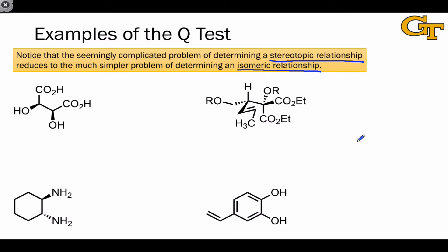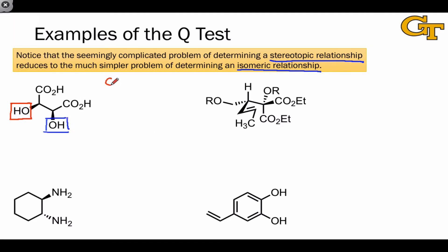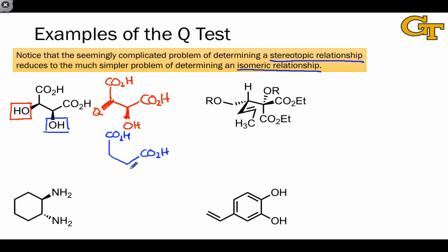So while generating the Q molecules is a little bit of work up front, once they've been generated, we're applying a method we already know to determine a stereotopic relationship. In the first example, imagine we're interested in the stereotopic relationship between this hydroxyl I'm boxing in red and this hydroxyl that I'm boxing in blue. Replacement of the red hydroxyl group with an achiral test group Q gives the structure shown here. We haven't touched the other hydroxyl group at all; we've simply replaced the red boxed hydroxyl with the letter Q. Replacement of the hydroxyl boxed in blue with an achiral test group Q leads to the molecule shown here. And now our task is to determine the isomeric relationship between these two molecules.